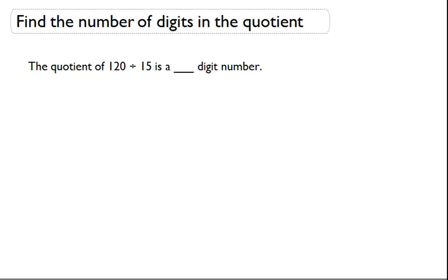Hi everyone, today we're going to learn how to find the number of digits that are supposed to be in the quotient. So in this problem, it says the quotient of 120 divided by 15 is a blank digit number.